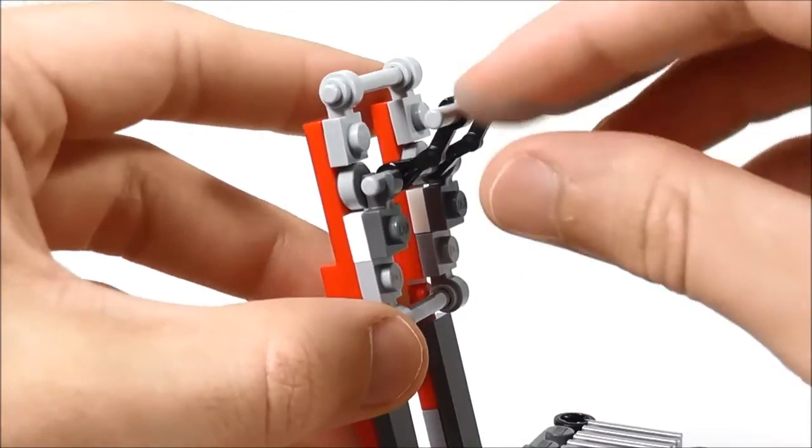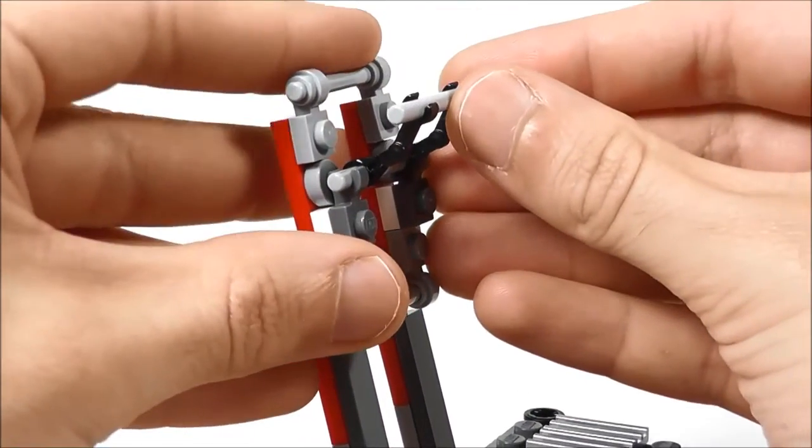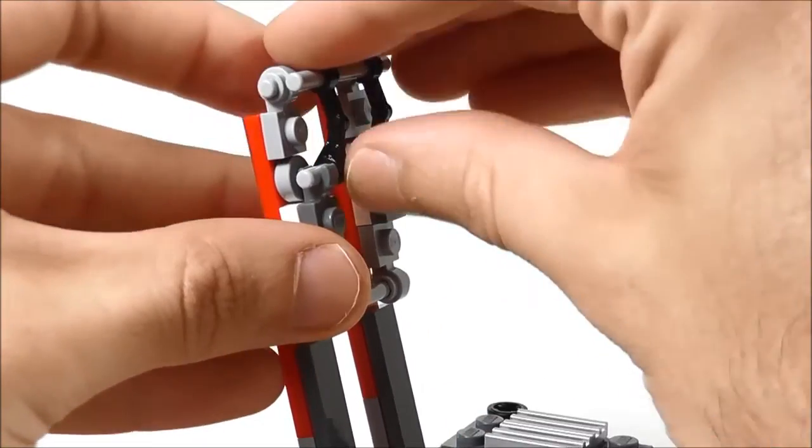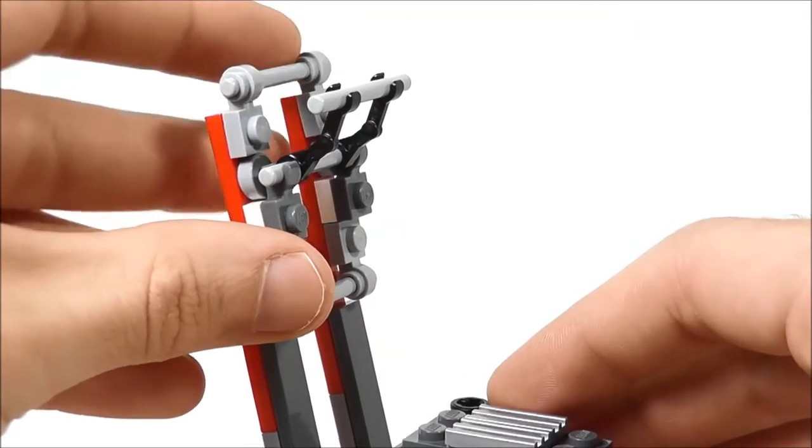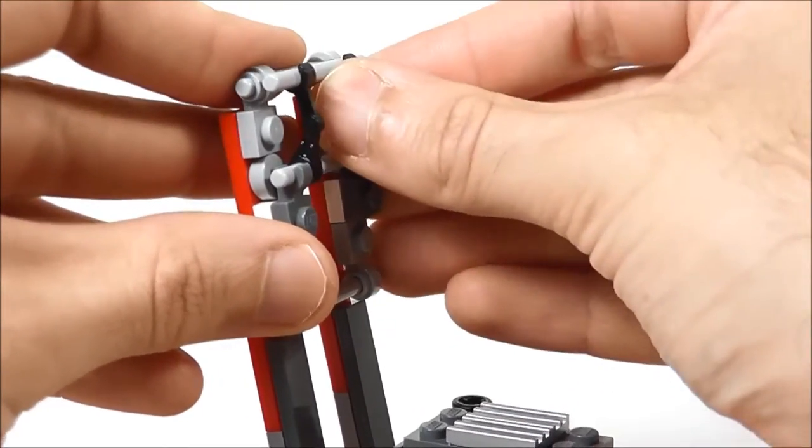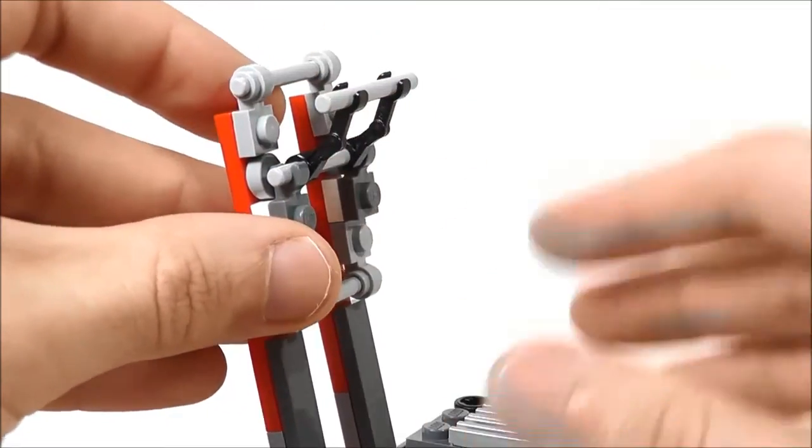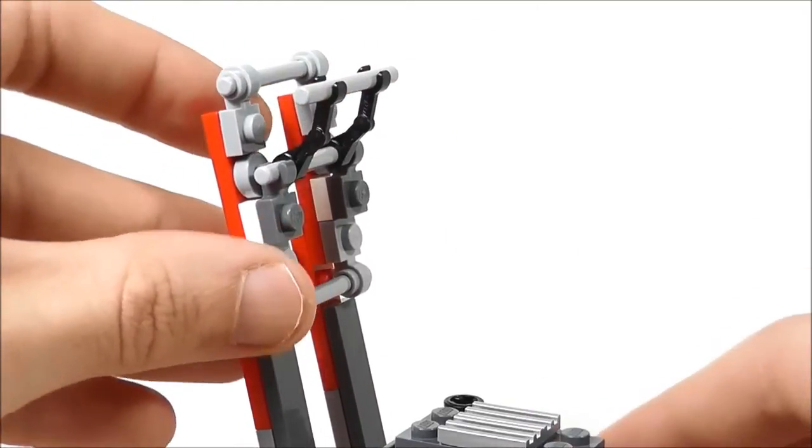And then the cool thing about this, which you probably have already noticed, is this has an actual feature where you pull this in. This is what turns the mower on. And then you let it go and it turns it off. Unfortunately, there's no spring or anything included in this set that I couldn't keep that pushed out. So you'd have to actually pull it in. You kind of just have to work it manually. But I think that works okay.